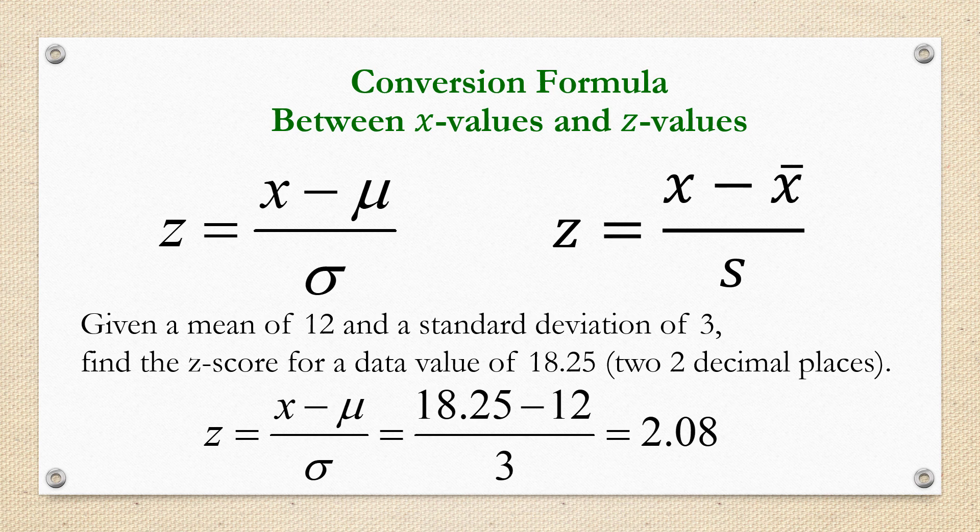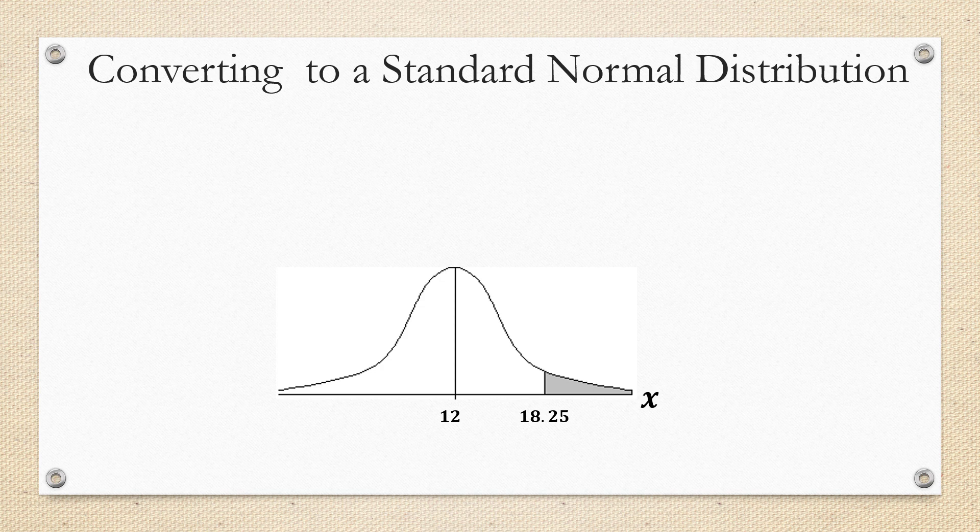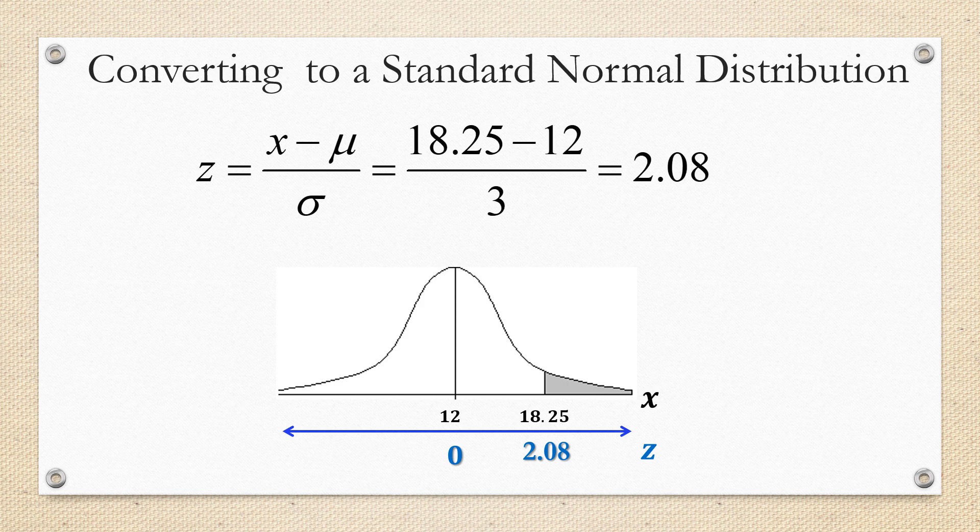Now, what would we use this value for? Well, let's say that we had a normal distribution and we knew the mean was 12 and we're interested in a data value 18.25. Maybe we're interested in how much data is less than that or how much data is more than that. Either way, what we're going to do is convert it to its z-score. The z-score of the mean is always zero and we already found that the z-score for 18.25 in this scenario is 2.08 using our z-score formula. In order to get one step closer to figuring out how much data is below or above 18.25, we would need to use a z-table.